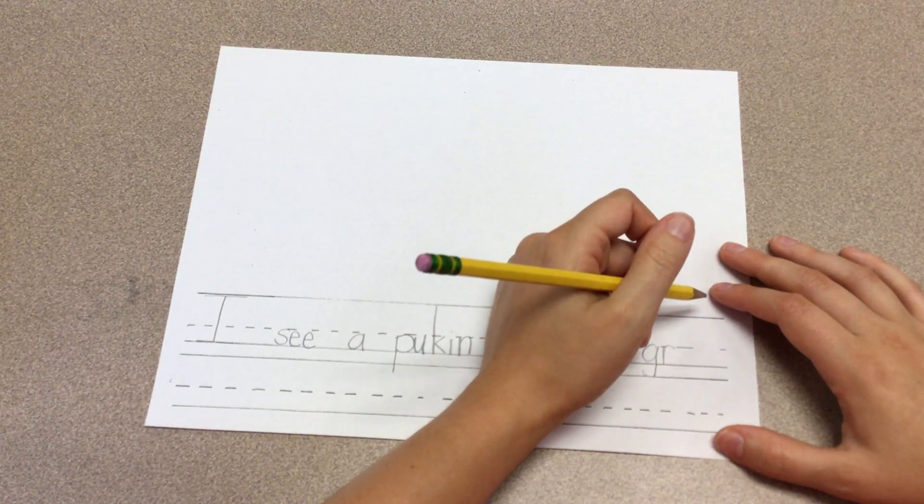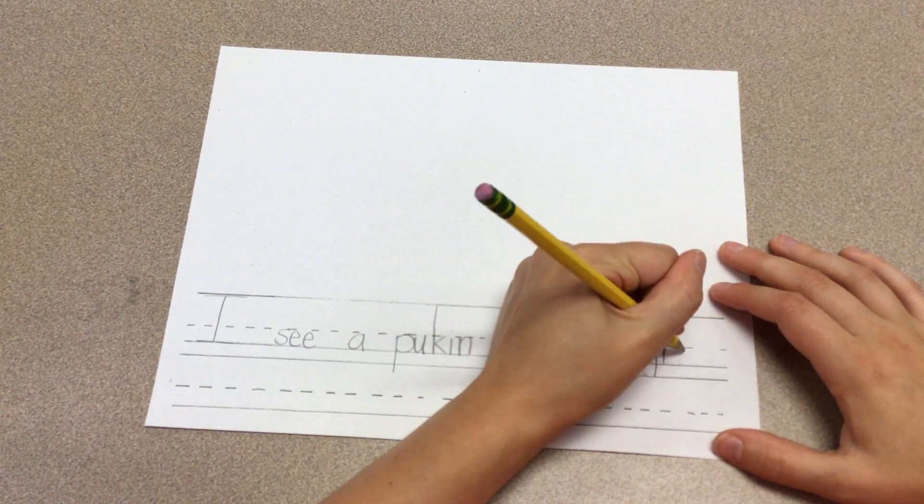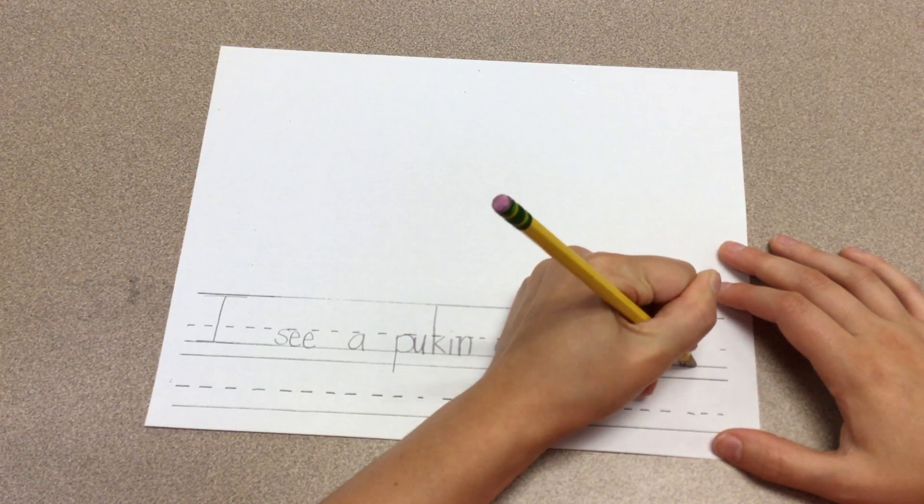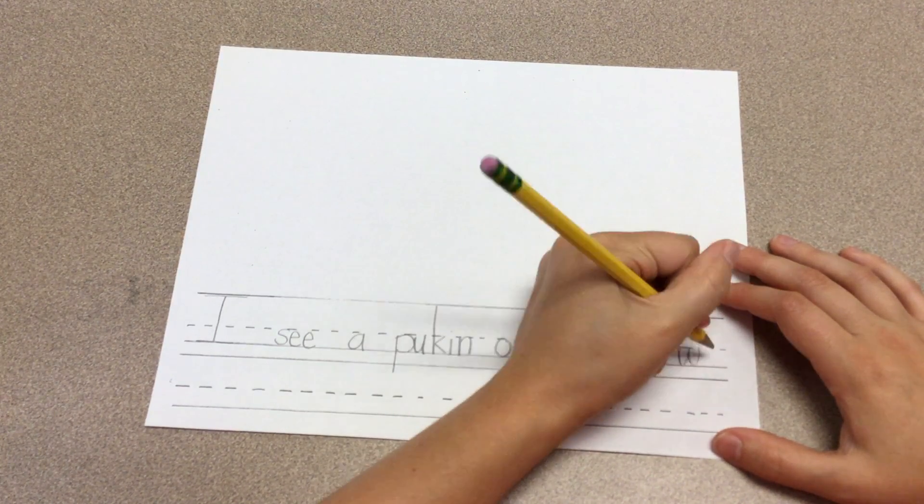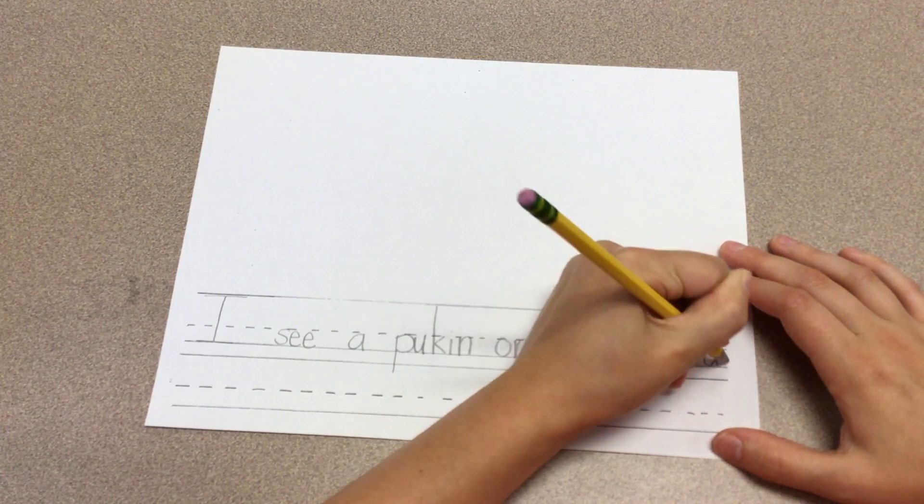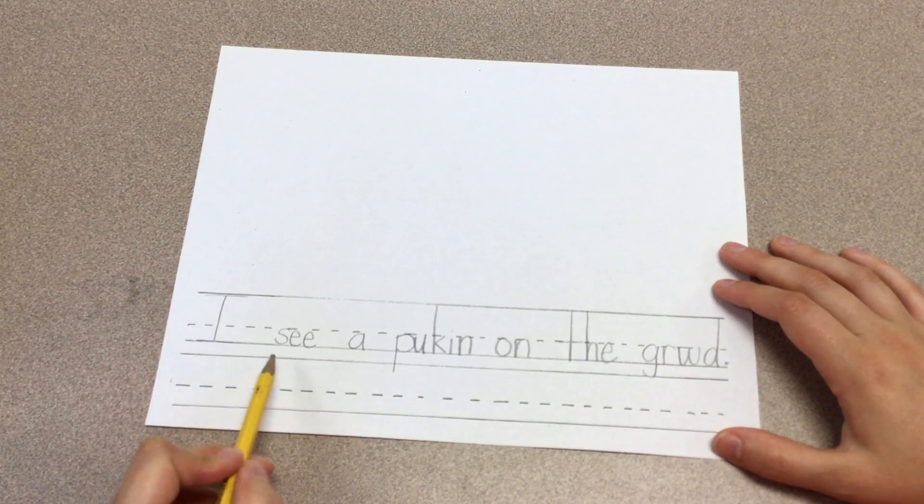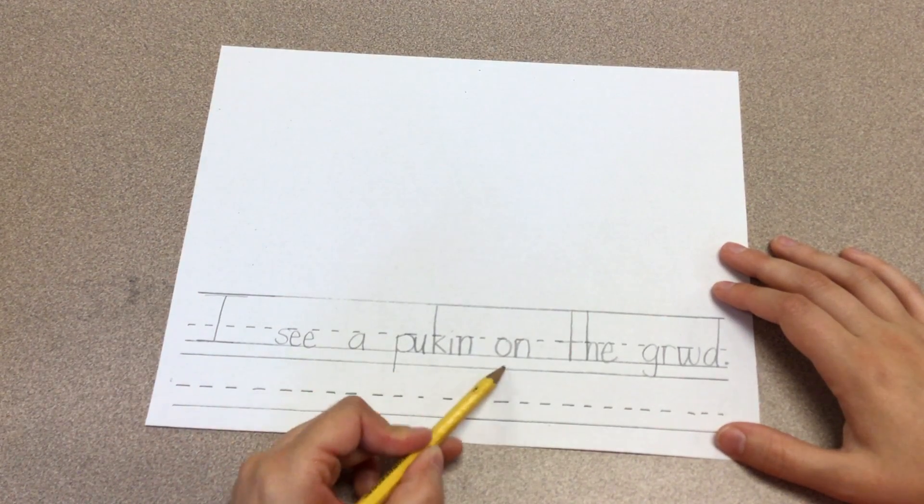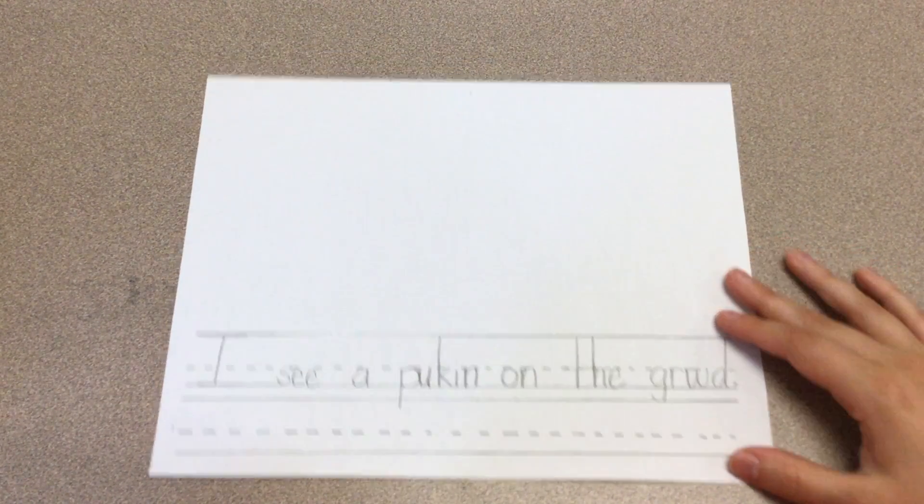Ow, w, w, w, sounds like Walter Walrus, right? Ground. D. D, so I can add a dippy duck and then a period. I see a pumpkin on the ground. Awesome.